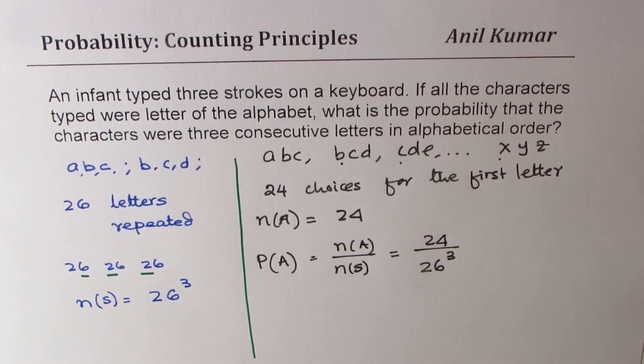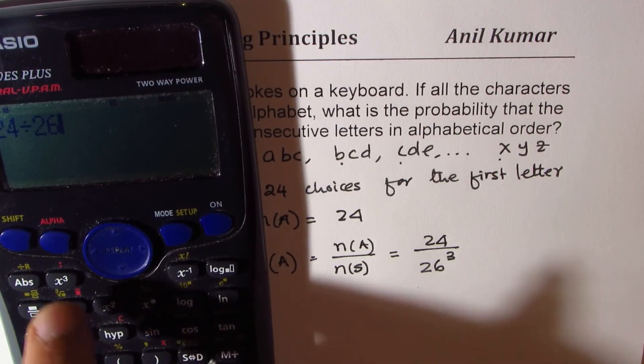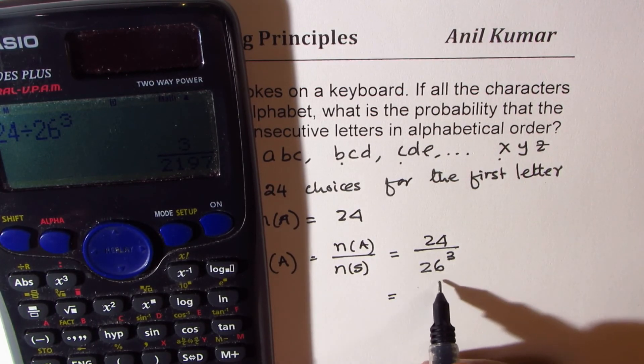Perfect. So that becomes the answer. Let's calculate. 24 divided by 26 cubed is equal to 3 over 2197.